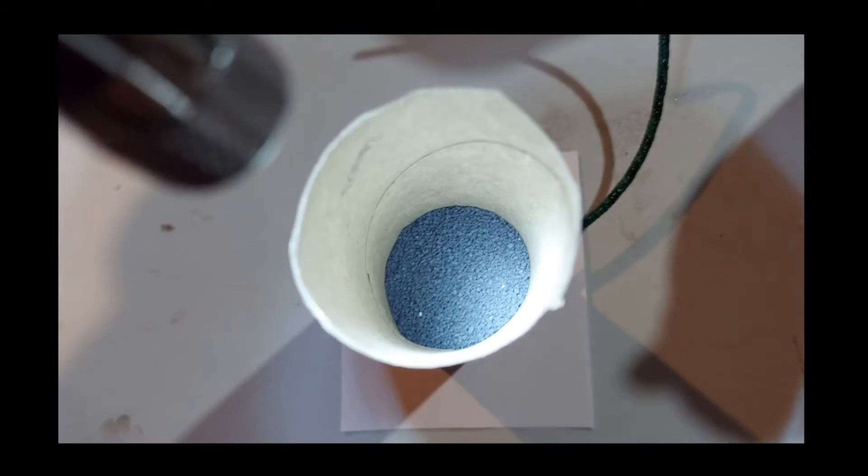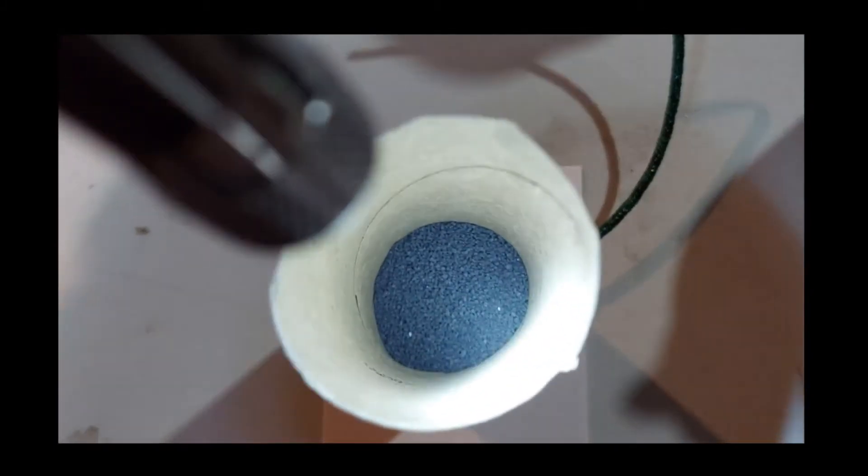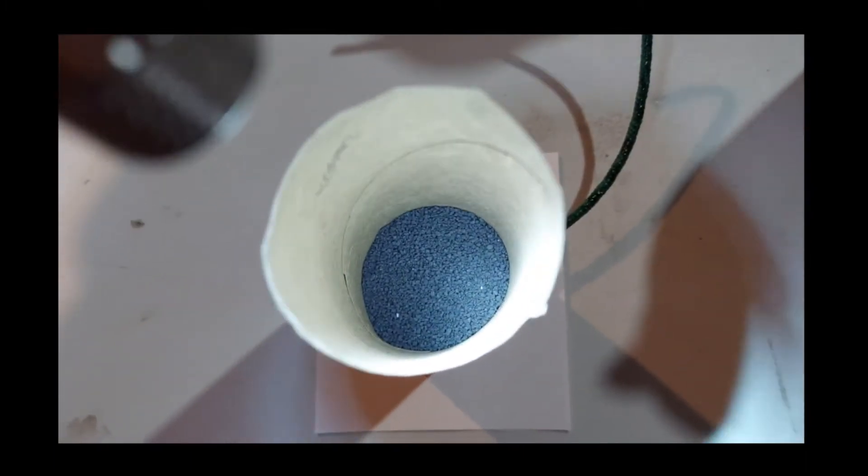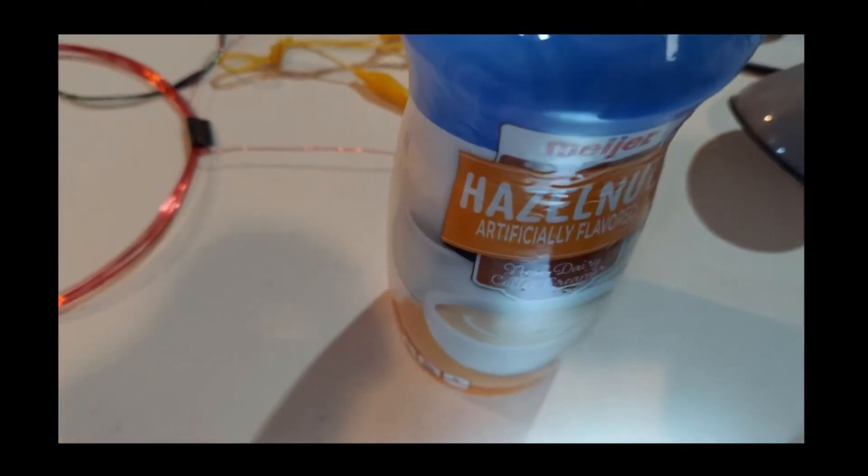I poured the gunpowder in there, which is what I'm using. You can see that, not a lot, because the cap from the gallon of milk is under that. So just enough to cover the fuse there. And then I'm going to put a little bit of tissue on top of that, and then the rest will be the creamer, the hazelnut creamer.